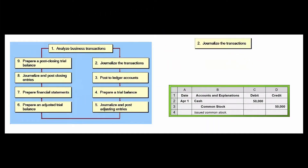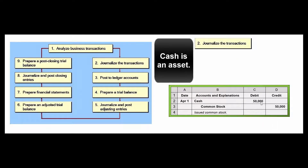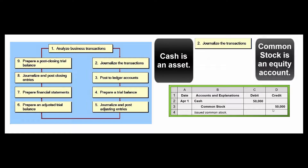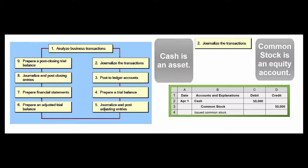For example, Freddy's Auto Service sells fifty thousand dollars worth of common stock at par value: debit cash for fifty thousand, credit common stock for fifty thousand.